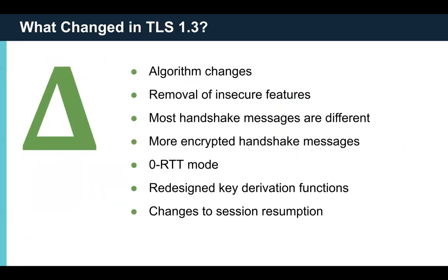There were many changes in TLS 1.3. The highlights include: algorithm changes, removal of insecure features, most handshake messages are different and more of them are encrypted, a new zero-RTT (zero round trip time) mode, redesigned key derivation functions, and changes to how session resumption is done.